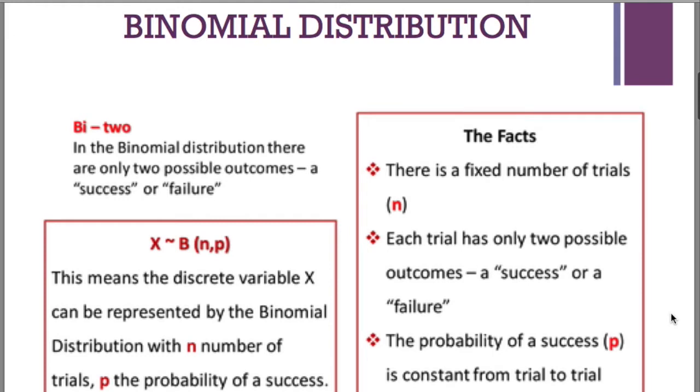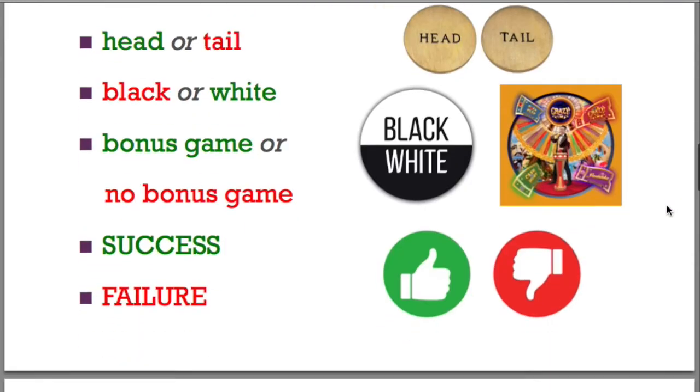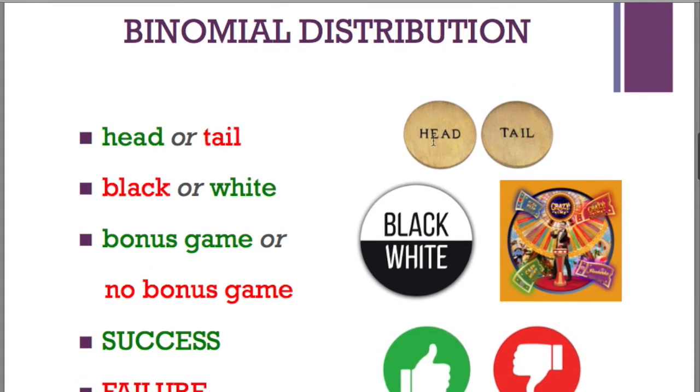So the binomial distribution - binomial, two values. Some examples: head or tail, black or white, bonus game or no bonus game.